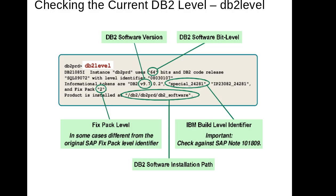So how do we check the current level of DB2? We have different DB2 versions like 8.1, 9.1, 10.1, 10.5. To identify that, we have a command called DB2 level. From the output, we can identify what version is installed and where. If you see '64' here, it means it's DB2 64-bit. And in the information token you can see V9.7, which means it's a DB2 version 9.7.